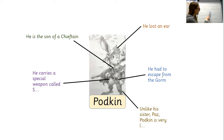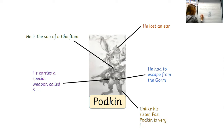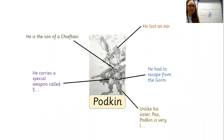I noticed in the illustration that he's holding a weapon, and of course that reminded me that Podkin has been given a very special weapon. The name of this — I've given you a clue — it's something beginning with S. It's called Starclaw. Well done if you remembered. So we can say that he carries a special weapon called Starclaw. We'll draw a circle around that one.